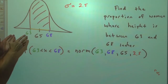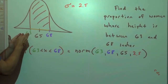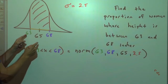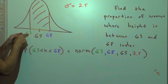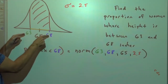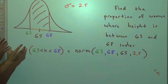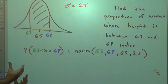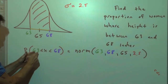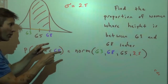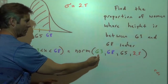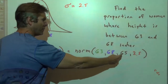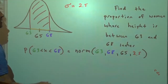We draw a normal curve and shade the area between 63 and 68. The low end is green, upper end is blue. The probability or proportion is in brown. From 63 to 68 we go to normal CDF. We type in the low end, the upper end of the interval, then the mean and the standard deviation, hit enter, and we've got it.